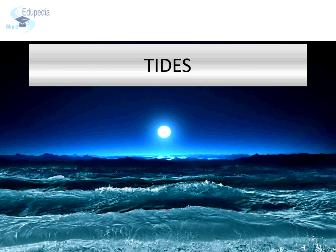Tides. Another important effect of the Moon on Earth is the occurrence of tides in ocean water. Tides are the periodic rise and fall of the water level in the sea, which occur at regular intervals twice a day. Even though the Moon is smaller than the Sun, its gravitational pull has a greater effect on Earth due to its nearness to the Earth as compared to the Sun.